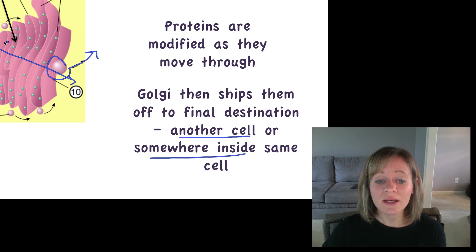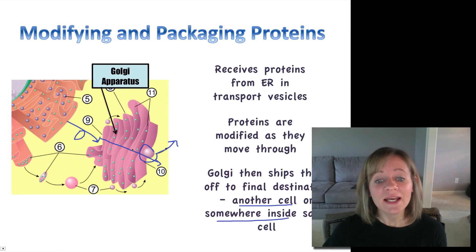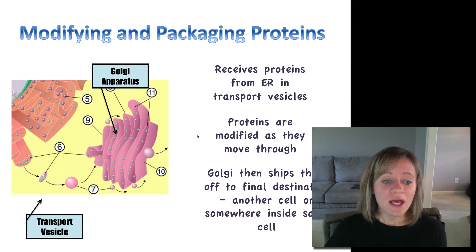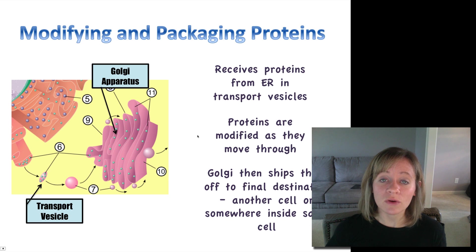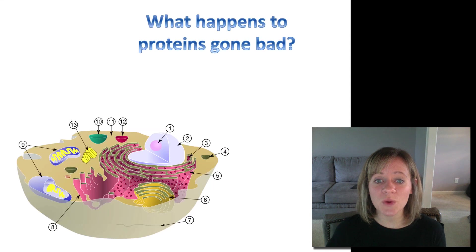So it receives it, modifies it, packages it, and then ships it off, kind of like the post office. And so that is a transport vesicle. Vesicles are very important in the functioning of cells because they are sort of like the UPS trucks, just taking things where they need to go.